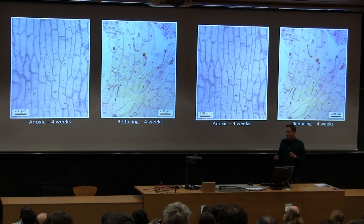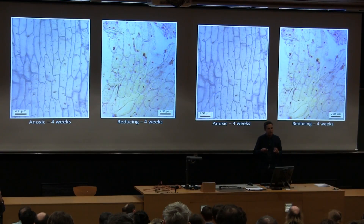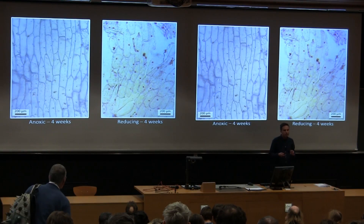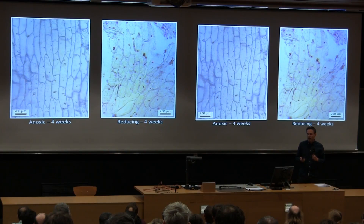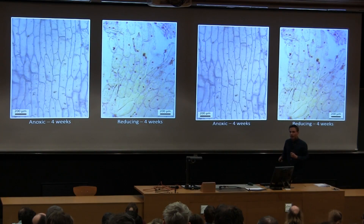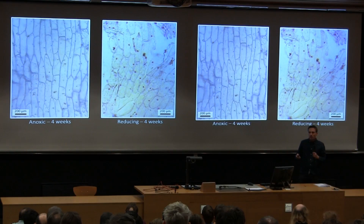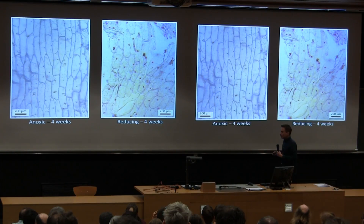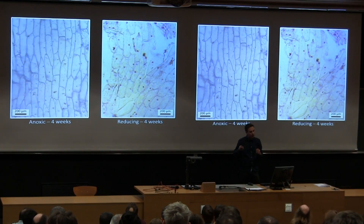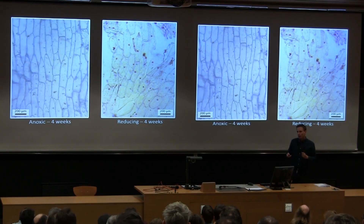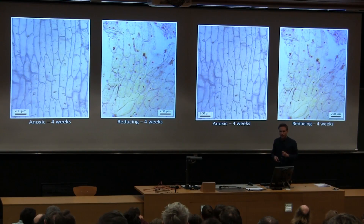The nuclei became increasingly difficult to image as the cells containing them began to disaggregate and disintegrate. Comparing to other decay experiments on other groups carried out in similar conditions, some structures we know are preserved in Lagerstätten don't survive as long in decay. So it seems from these simple experiments that nuclei can feasibly survive on a timescale compatible with preservation in the fossil record.